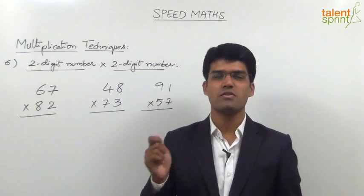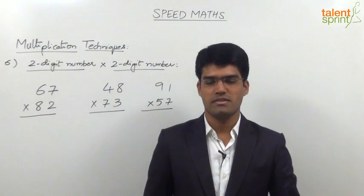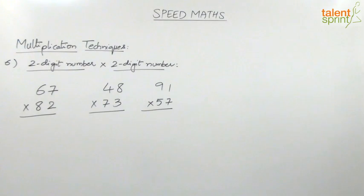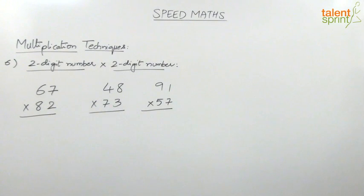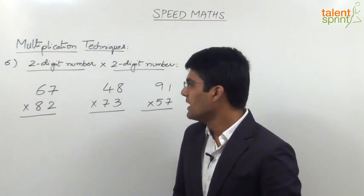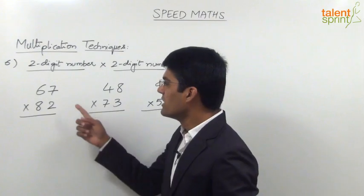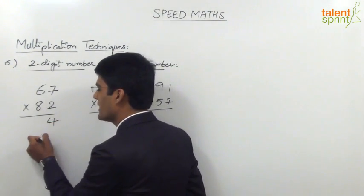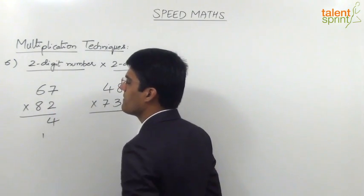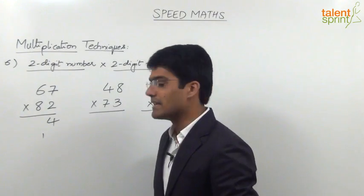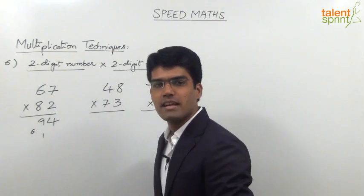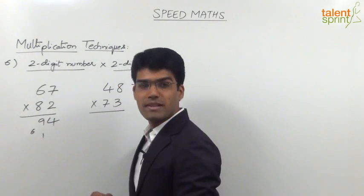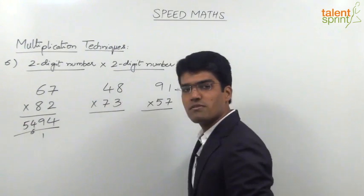Here are three examples for you to solve. Now let us see the correct answers. The first one is 67 into 82. 7 into 2 is 14, so 4 in the answer and 1 carried forward. 6 into 2 is 12, 8 into 7 is 56. 56 plus 12 is 68. 68 plus 1 is 69. So 9 in the answer and 6 carried forward. Last step: 6 into 8 is 48. 48 plus 6 is 54. So the final answer is 5494.